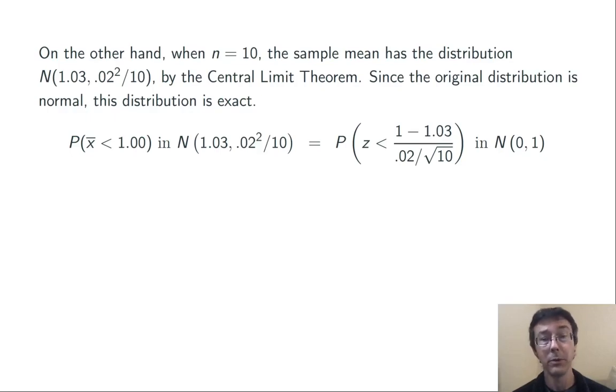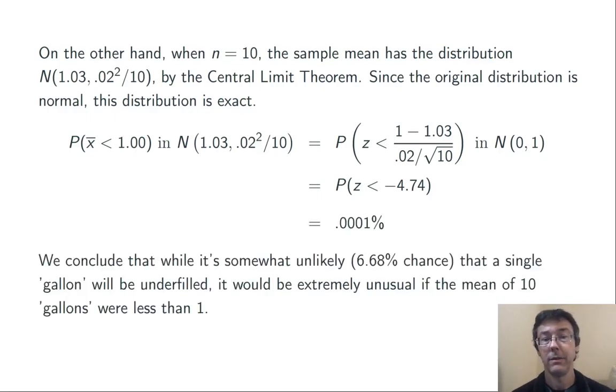We want to find the probability of getting x-bar less than 1 in this normal distribution. As always, we compute a z-score, the value we're interested in, 1, minus the mean of the sampling distribution of x-bar, 1.03, divided by its standard deviation, σ divided by the square root of n. Doing out that arithmetic, we get negative 4.74. Taking the normal CDF of that, we get 0.0001%. Our conclusion here is that while it's somewhat unlikely, less than 7%, that a single gallon will be underfilled, it would be extremely unusual if the mean of 10 gallons were less than 1.